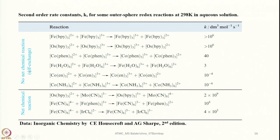You can see here the second-order rate constants K for some outer-sphere redox reactions carried out at 298 Kelvin in aqueous solution are listed here. The rates of outer-sphere self-exchange reactions vary considerably. The fastest reactions listed in the chart are between two low-spin complexes which differ only in the presence of an extra non-bonding electron in the t2g orbital of the complex containing the lower oxidation state metal. That means the difference is only one extra electron in t2g because one is in the +2 state and the other is in the +3 state; other than that, both are low-spin complexes because they are under the influence of a strong field ligand.